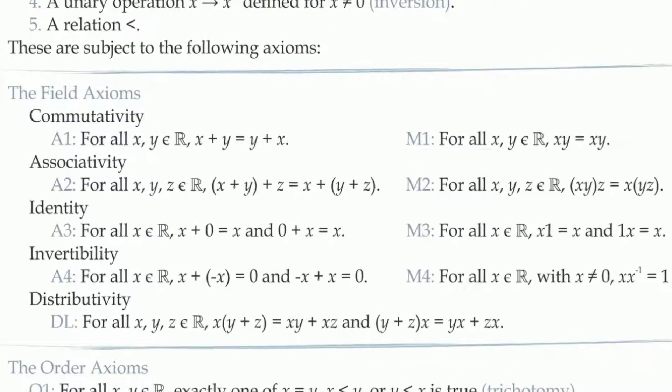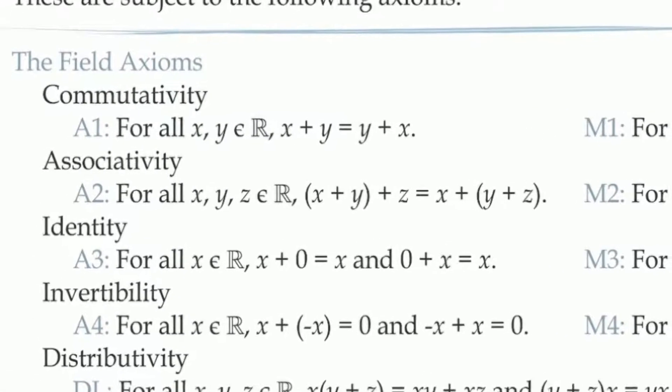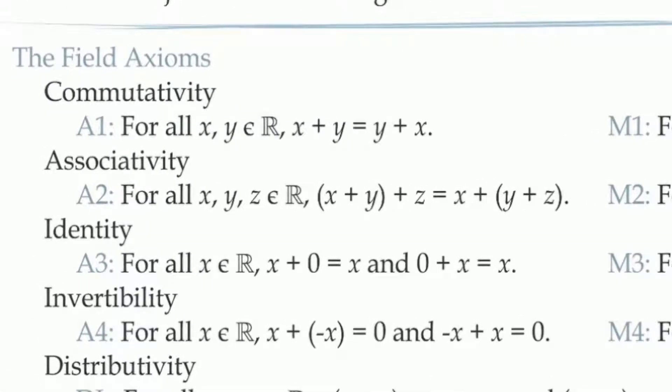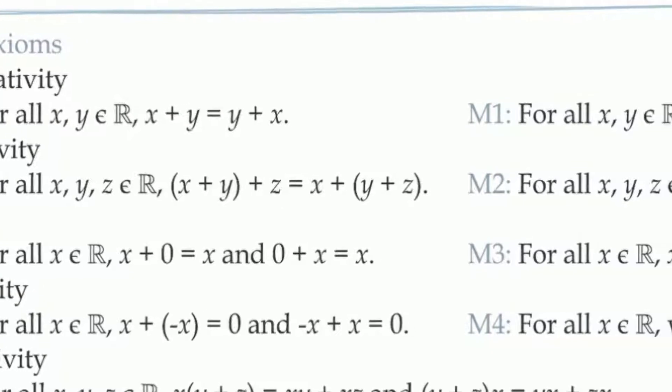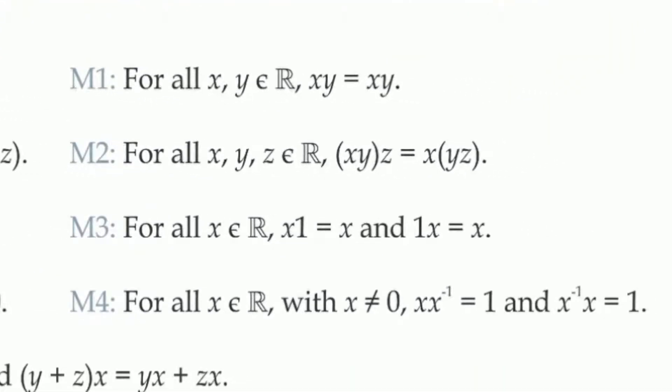We can break up the first eight of the field axioms into two groups of four. The first four apply to addition, and the second four are the exact same axioms, but applied to multiplication.